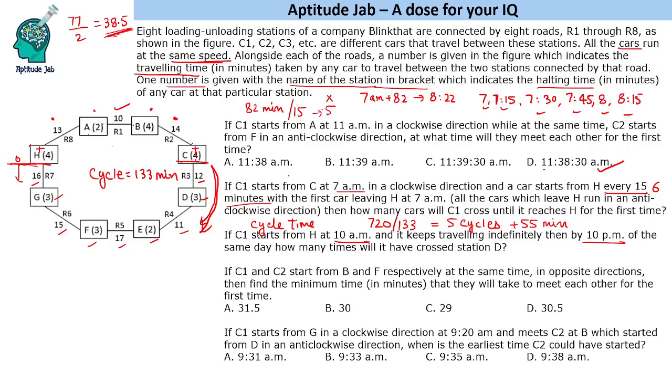Now in this question, the direction is not given, whether it is going clockwise or anticlockwise. So the car has to reach from H to D. We will find whether it can reach D in 55 minutes or not. If you go in this direction, how much time does it take? 15, 25, 29, 43, 47, 59. So it cannot reach D if it started in clockwise direction.